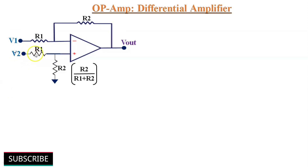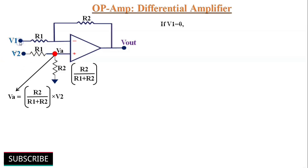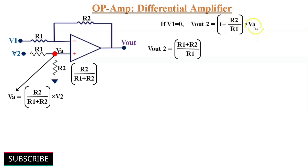The input signal V2 is reduced by the voltage divider circuit, and the actual voltage at the non-inverting terminal, Va, equals the voltage drop across resistor R2. According to the voltage divider rule, Va = R2/(R1 + R2) × V2. Applying the superposition theorem, Vout2 = (1 + R2/R1) × Va = (R1 + R2)/R1 × R2/(R1 + R2) × V2, which simplifies to (R2/R1) × V2.